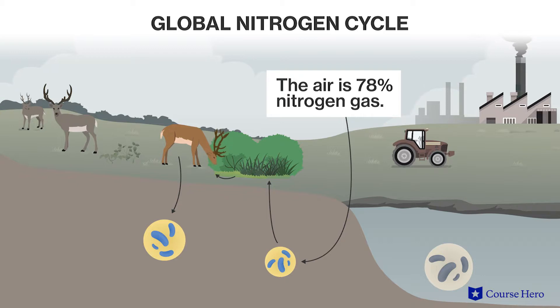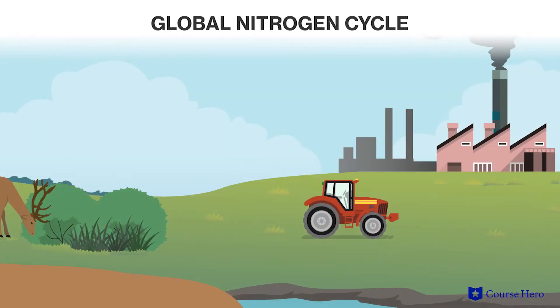Specialized bacteria then process the nitrogen in these amino acids into nitrates, which can be stored in the soil. Some of the soil nitrates are picked up by plants that are able to use nitrogen in this form. Some soil nitrates are processed by denitrifying bacteria, releasing nitrogen gas back into the atmosphere. In addition, human industrial practices release nitrogen oxides into the atmosphere as air pollution.